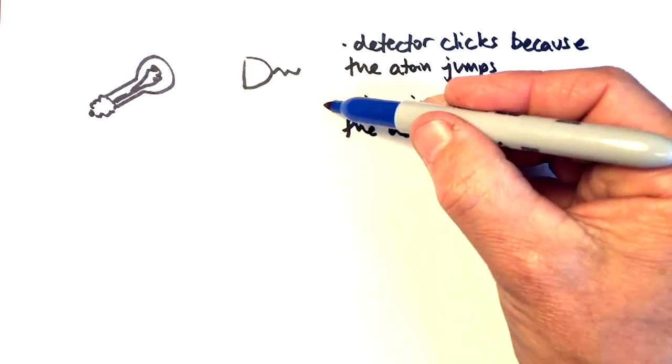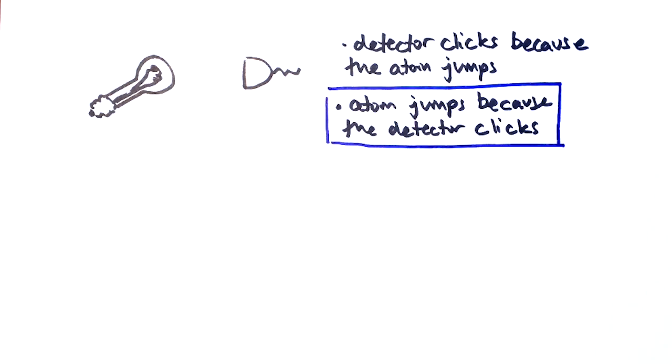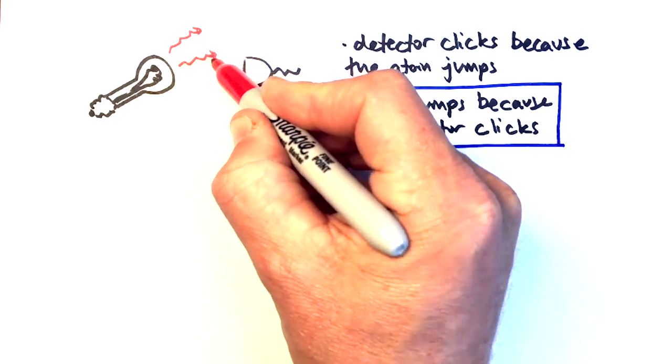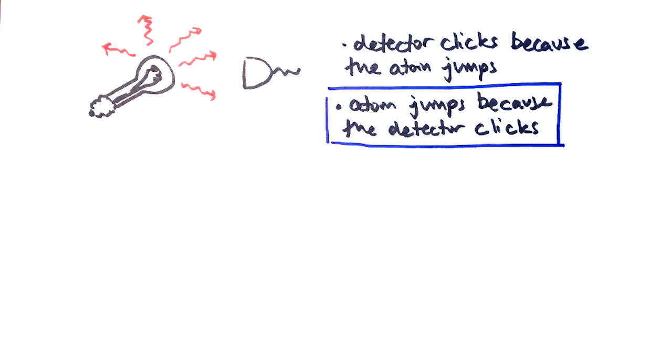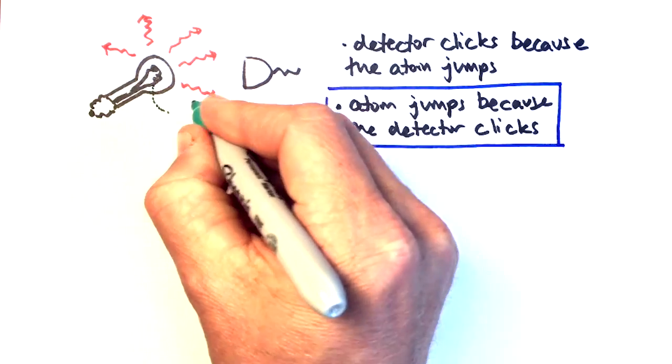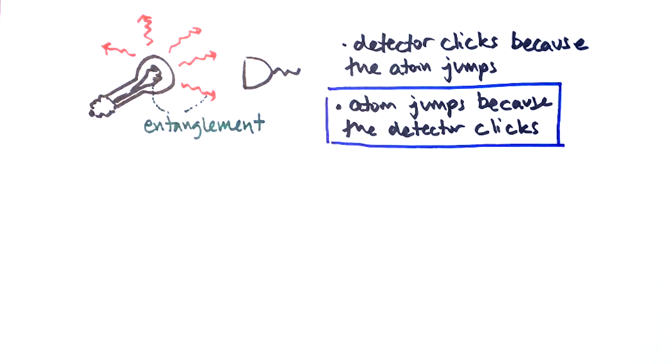Well we've shown that the atom jumps because the detector clicks, and that is because if we instead detect the wave nature of light, we find that the evolution of the atomic state is very different. This is fundamentally due to the entanglement between the atom and its light. And this gives us ways to control the atom by the way that we look at the light.